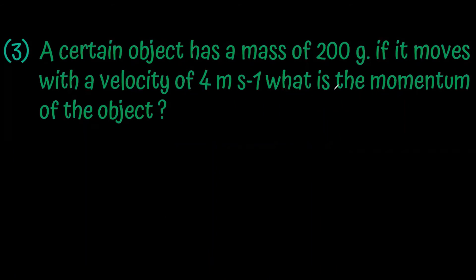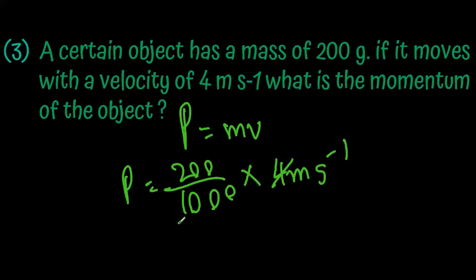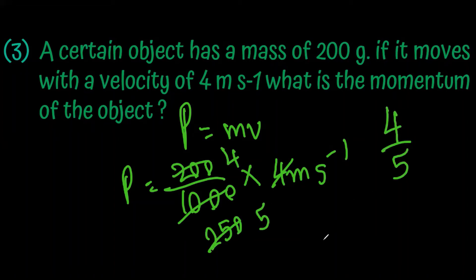A certain object has a mass of 200 grams and if it moves with a velocity of 4 meters per second, what is the momentum of that object? The momentum is 0.8 kg·m·s⁻¹.